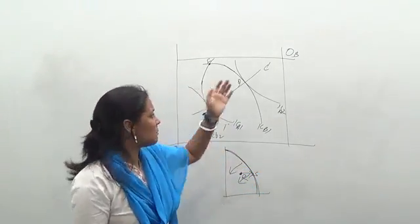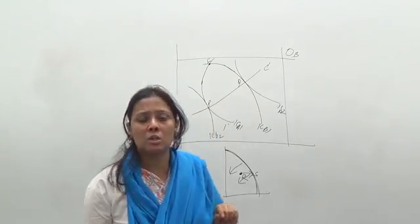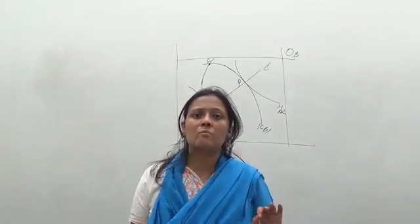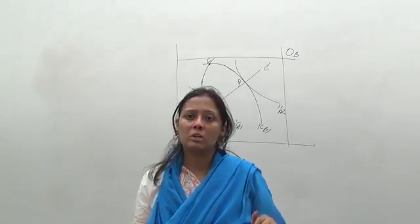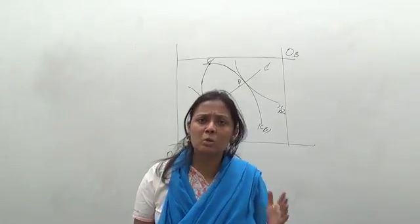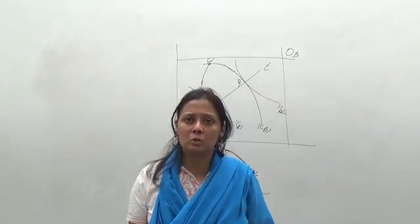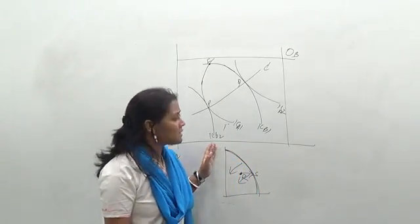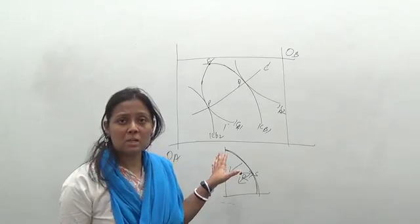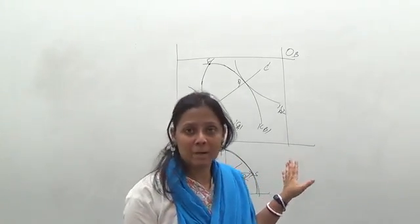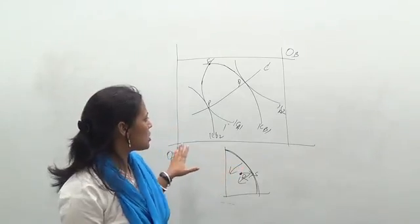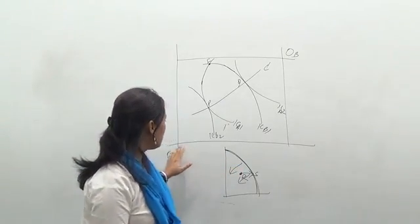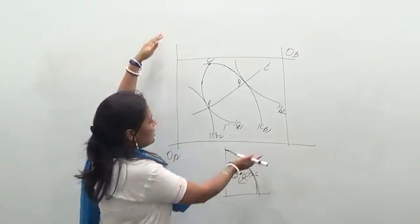But the same argument or discussion can be made with the help of an Edgeworth box diagram. Edgeworth was also someone who was very much keen to work on welfare economics and made a very good contribution, which is considered to be the best contribution in explaining the Pareto optimality situation.